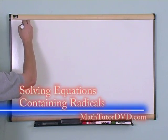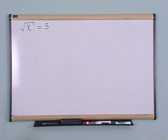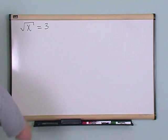What if you have an equation that goes like this: square root of x is equal to 3, and you want to solve this equation? Obviously you want to solve it for the variable x.